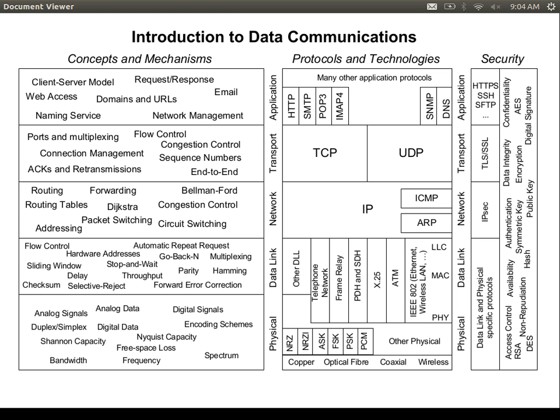There are some examples in here, some different media we talked about. More recently, we started to look at the data link layer. Even though we can send our data across a link using the physical layer, we know that in some cases there will be errors, and we want to avoid those errors and fix them if possible. So the last topic, we looked at some protocols for flow control and error control — stop and wait, sliding windows, selective reject.